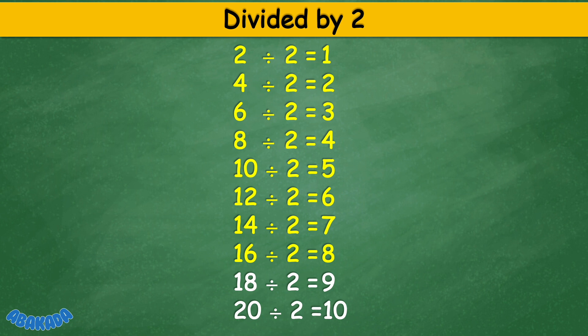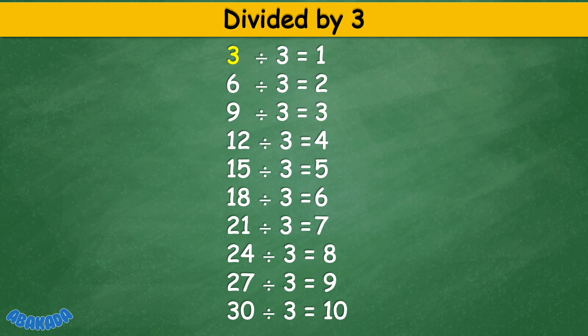18 divided by 2 equals 9, 20 divided by 2 equals 10. Divided by 3: 3 divided by 3 equals 1, 6 divided by 3 equals 2.